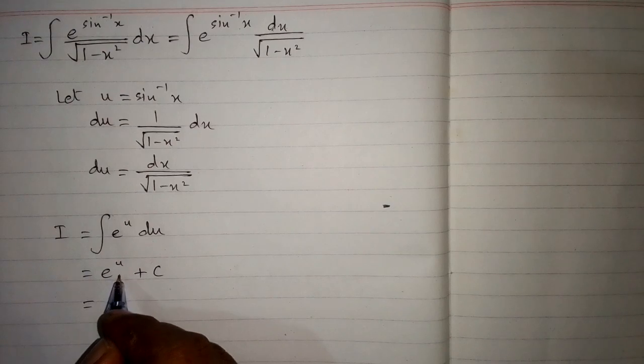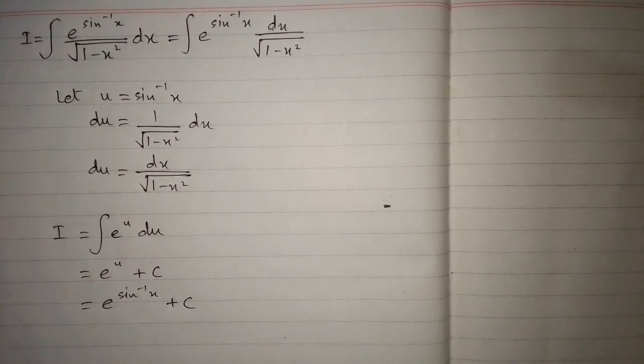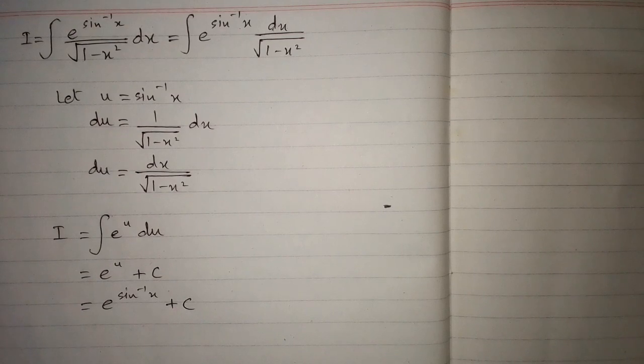And then we will put the value of u, which is sine inverse x. So we have e to the power sine inverse x plus c, where c is the constant.